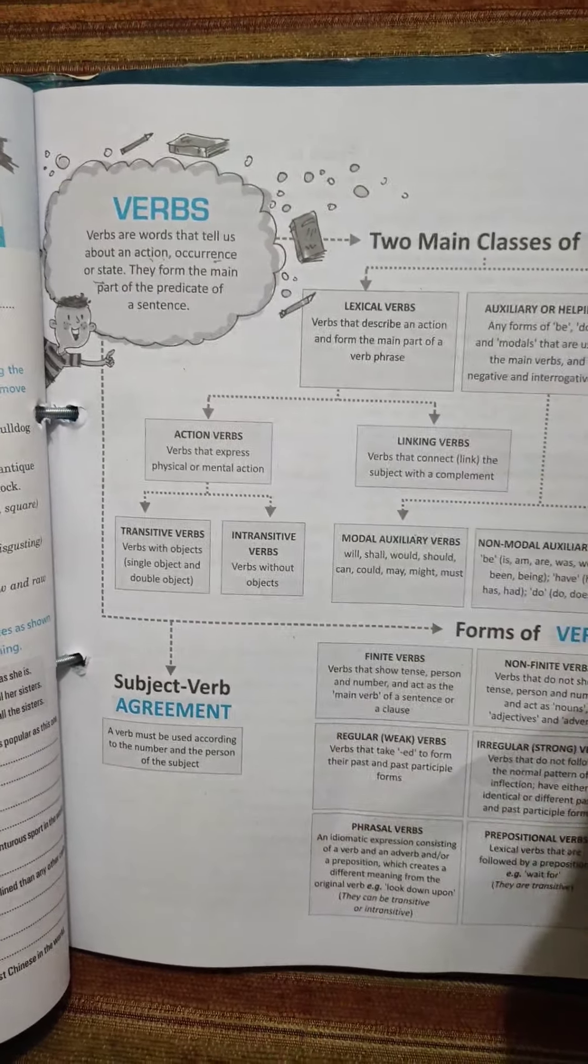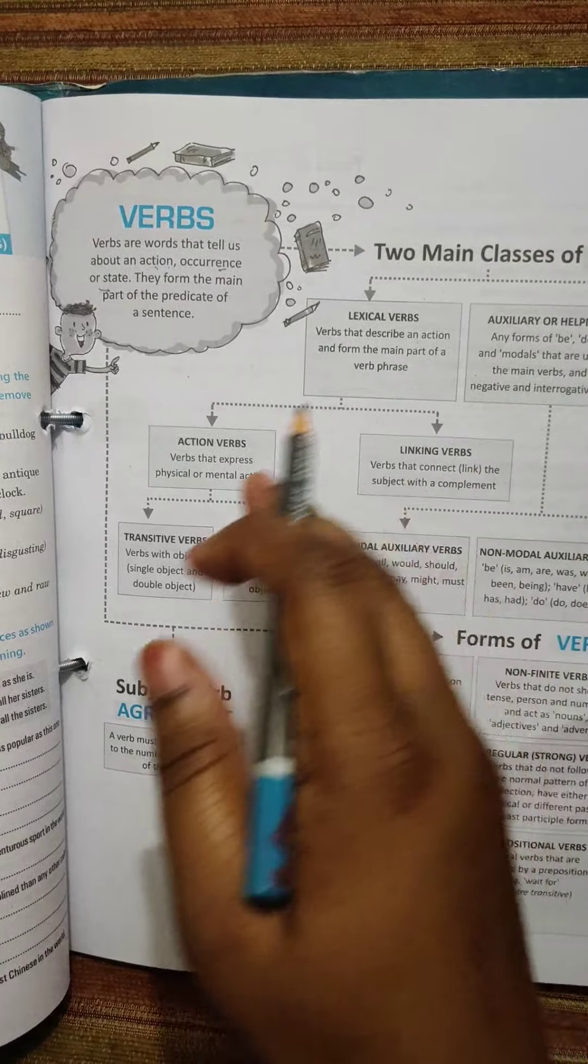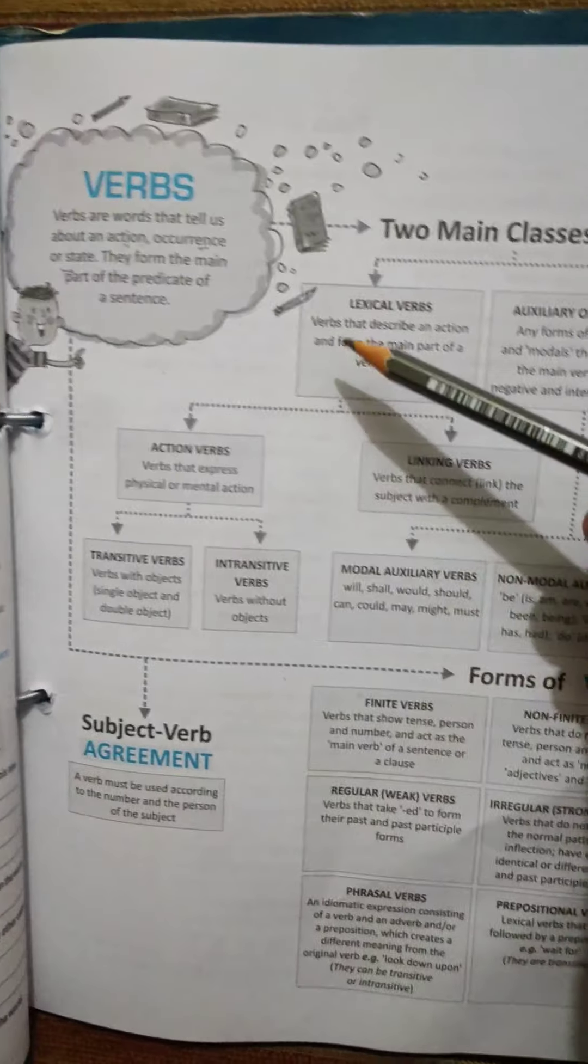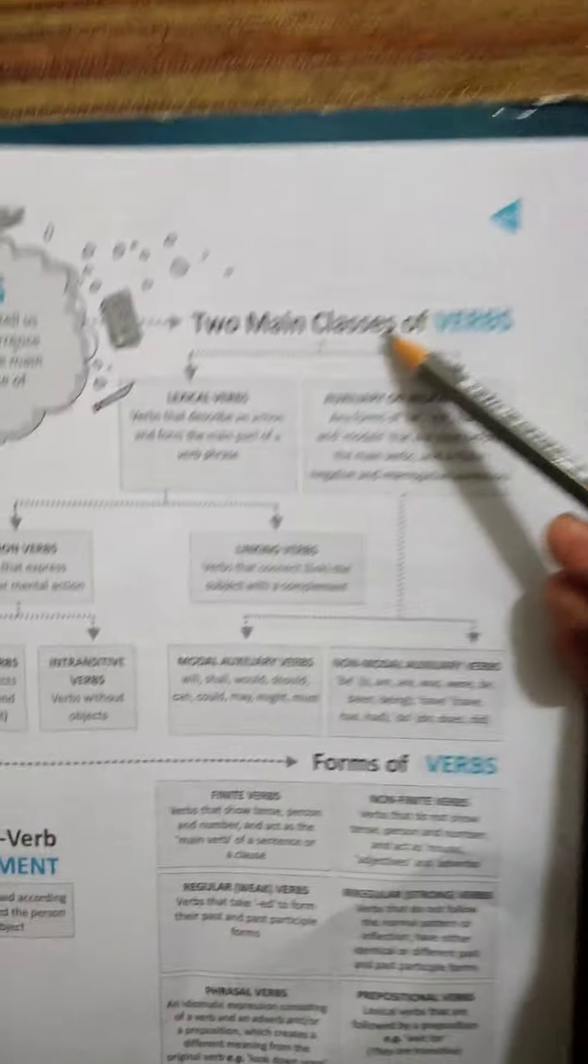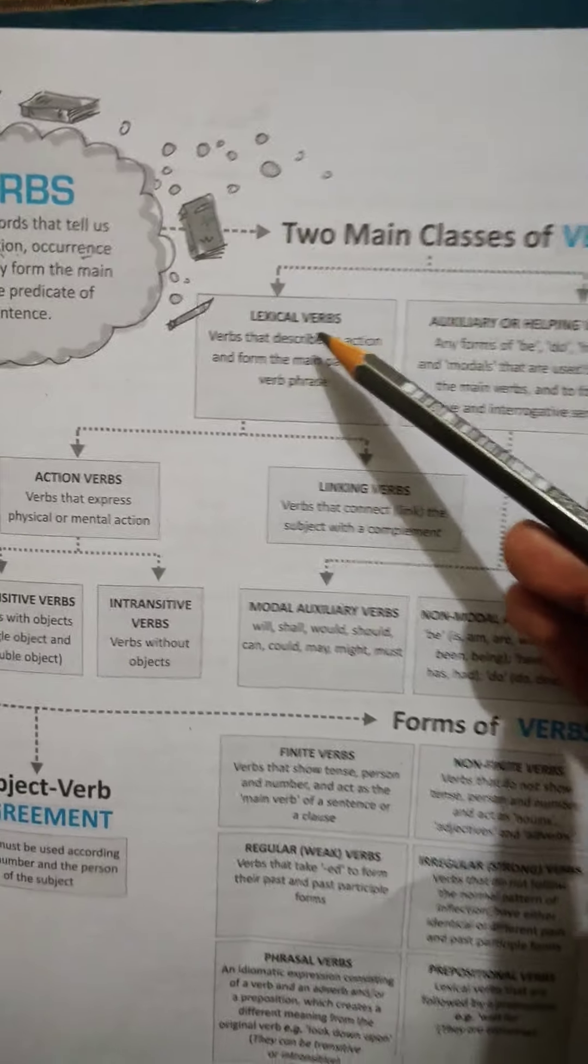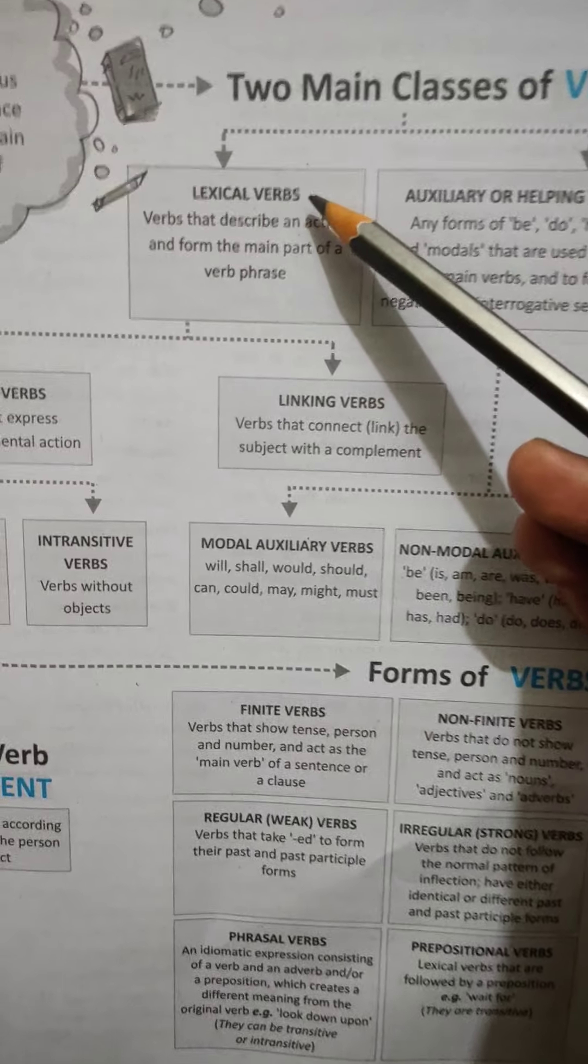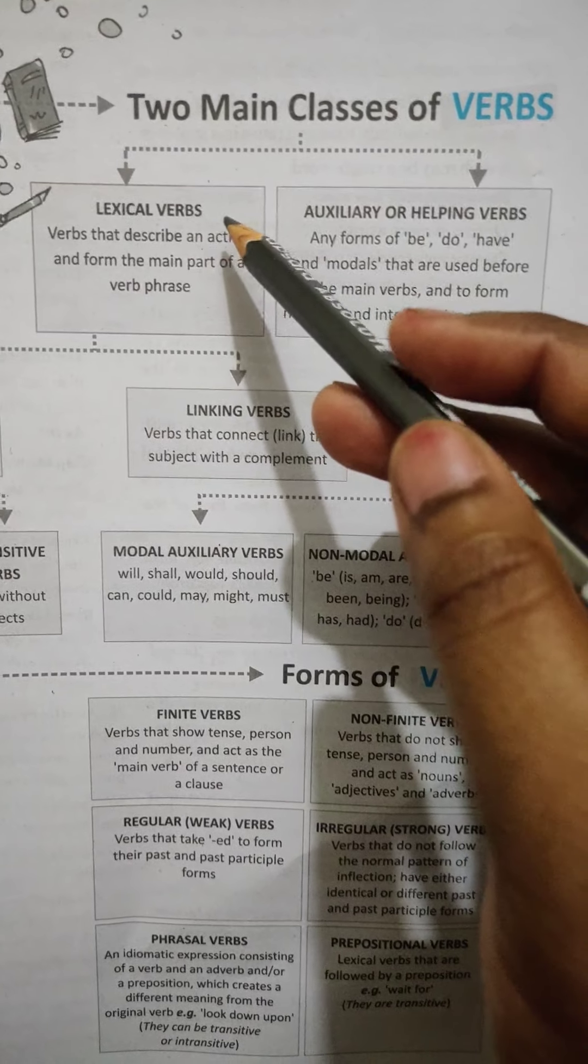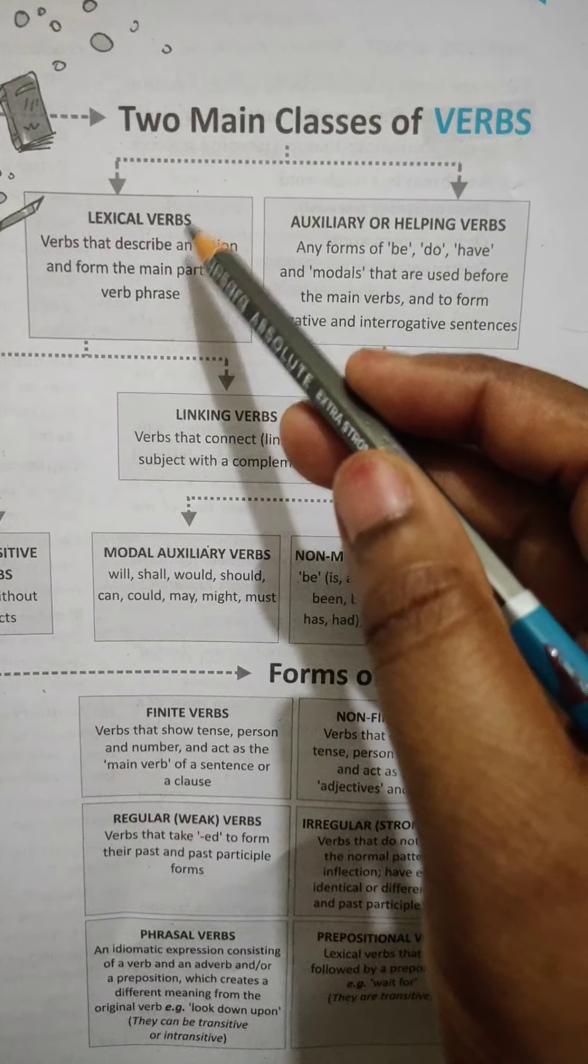They form the main part of the predicate of a sentence. In a sentence you get a part of subject, other part will be known as predicate. And predicate always contains this word, verb. Two main classes of verbs are lexical verbs. Here in the diagram you can see, there are two main classes of verbs.